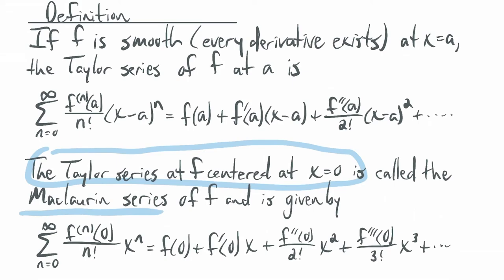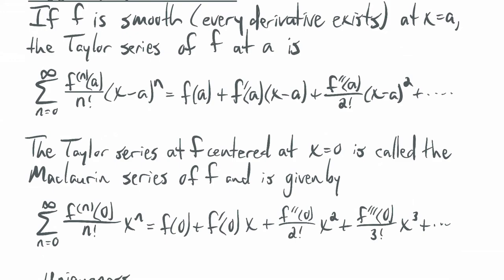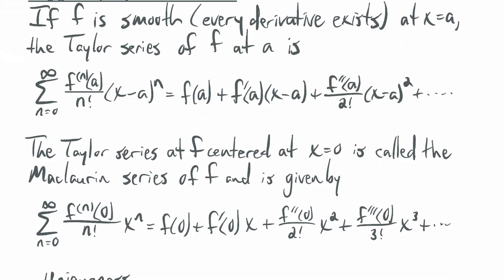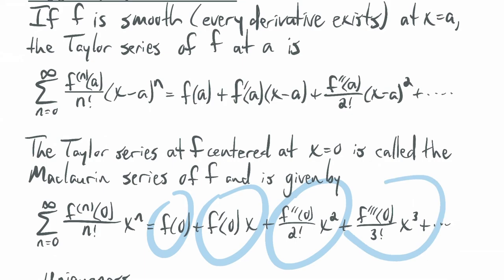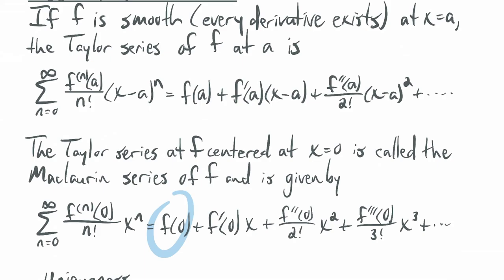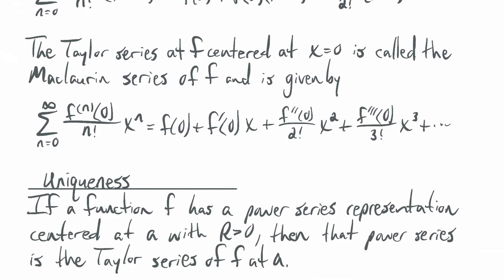The Taylor series centered at 0 is called the McLaurin series. It is given by the sum n goes from 0 to infinity of the nth derivative of the function evaluated at 0, divided by n factorial, times x to the n. The terms go: f of 0 plus f prime of 0 times x plus f double prime of 0 over 2 factorial times x squared plus f triple prime of 0 over 3 factorial times x cubed, and so forth.